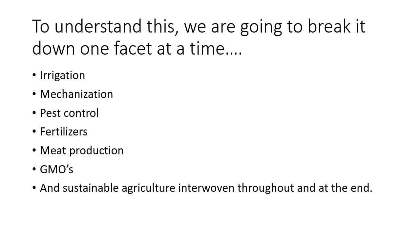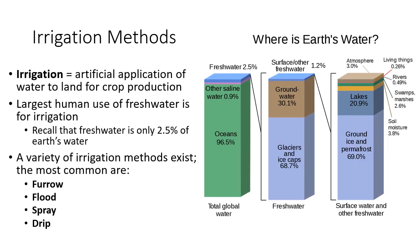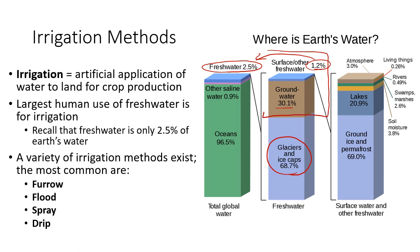We're going to go through each learning objective individually, starting with irrigation. This diagram shows how little fresh water there is on the planet — only about 2.5 percent of all water on Earth is fresh water. Of that 2.5 percent, more than two-thirds is locked in ice and unavailable. About a third is groundwater, and surface water represents only about 1.2 percent of 2.5 percent — a very small amount in lakes, rivers, swamps, and marshes. That surface water and groundwater are what's available for irrigation use.